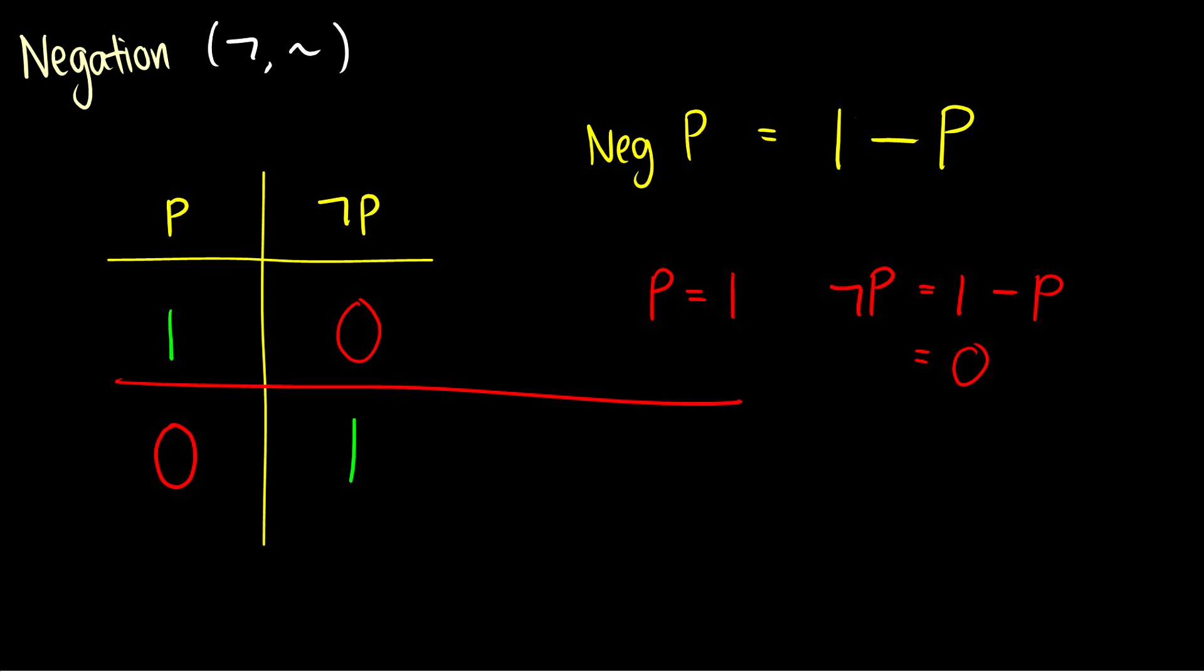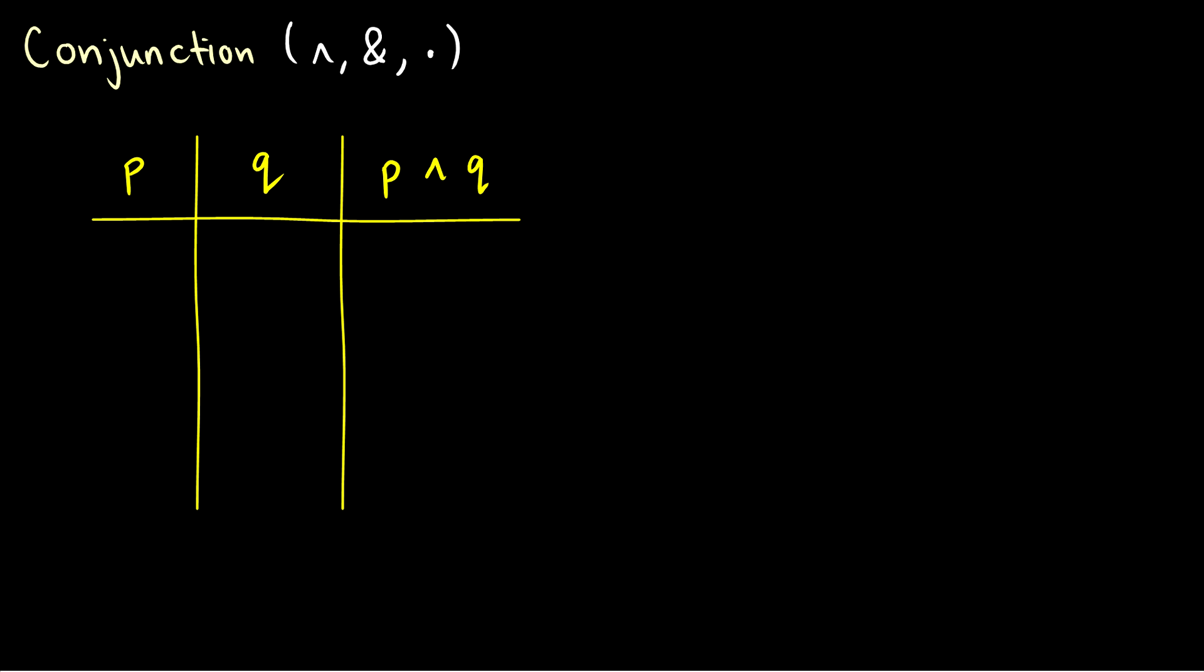Let's take a look at connectives that involve more than one statement. So for example, conjunction. You will see either the caret, the AND symbol, or the dot for conjunction. I will always use the caret because it's typically used in most discrete math texts. Conjunction takes two statements and combines them.